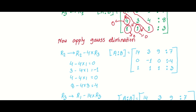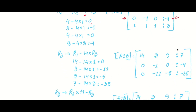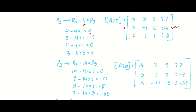For the first row, positions below the pivot are made zero. For row 2, we use the multiplier to eliminate the element. The operation is: 4 minus 4 into 1 equals 0, so that position becomes zero. The same row operation is applied including the constant column. We update the augmented matrix after each operation.